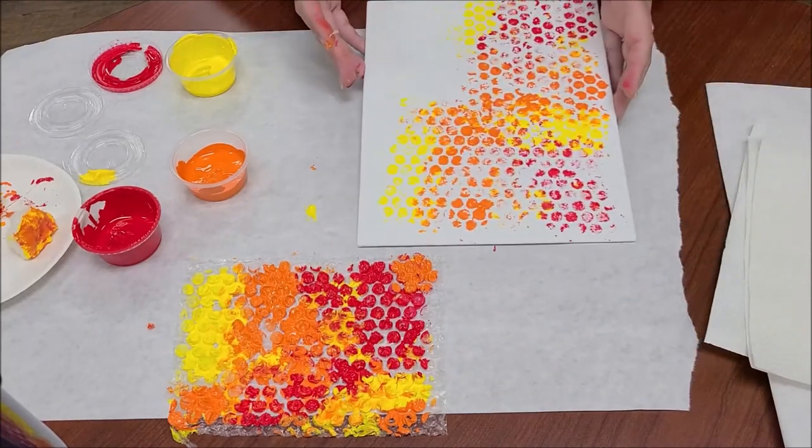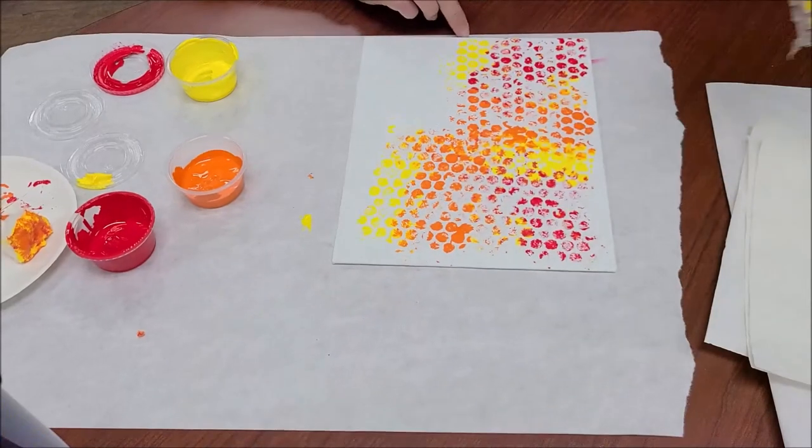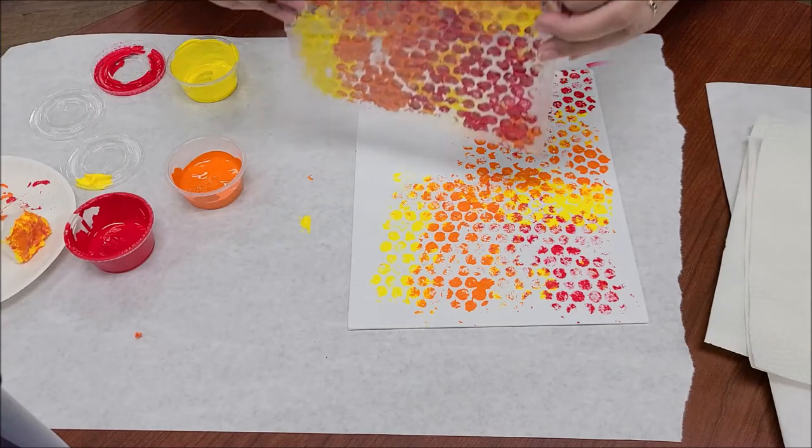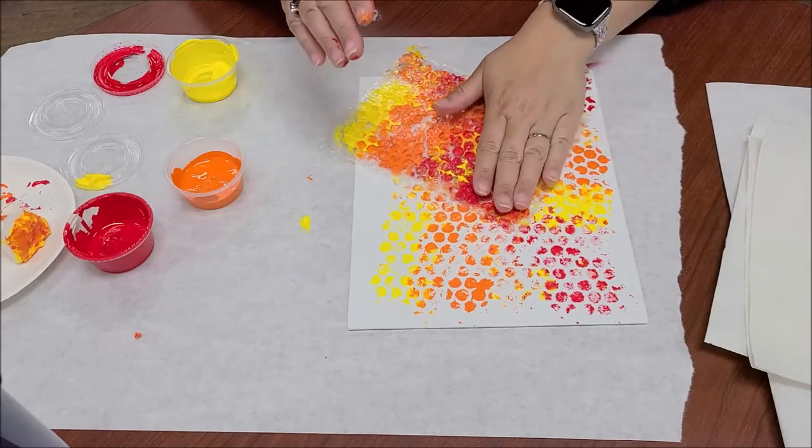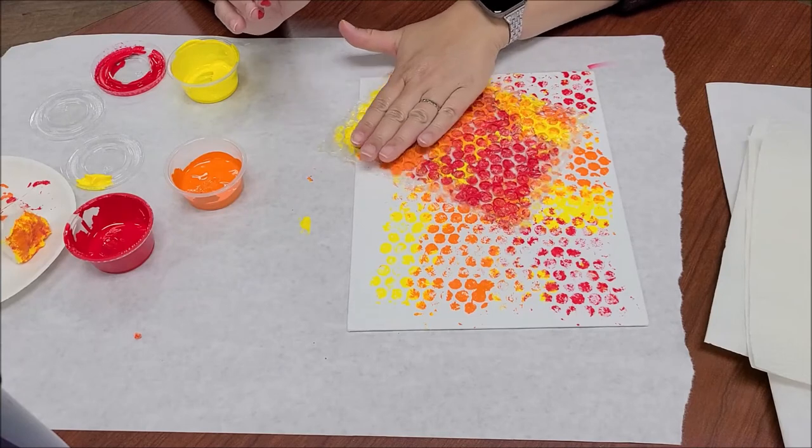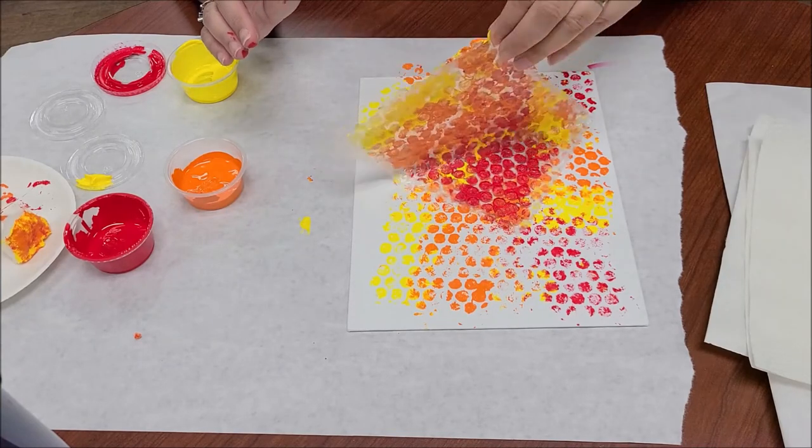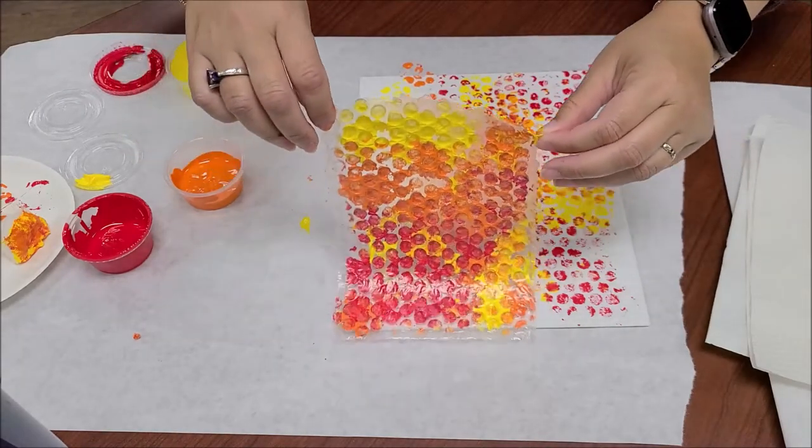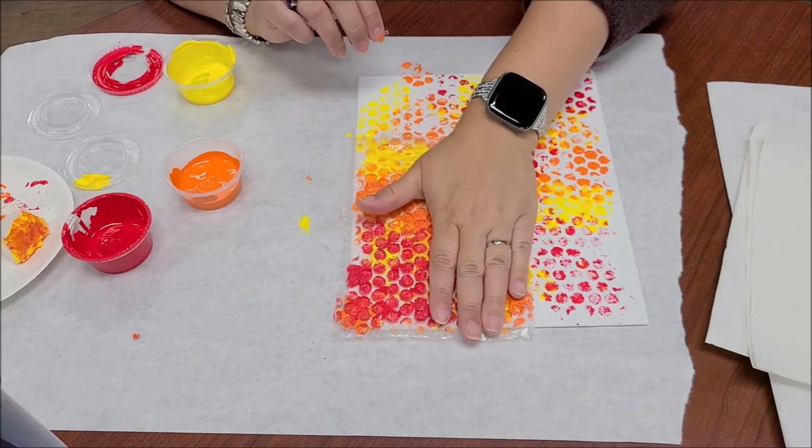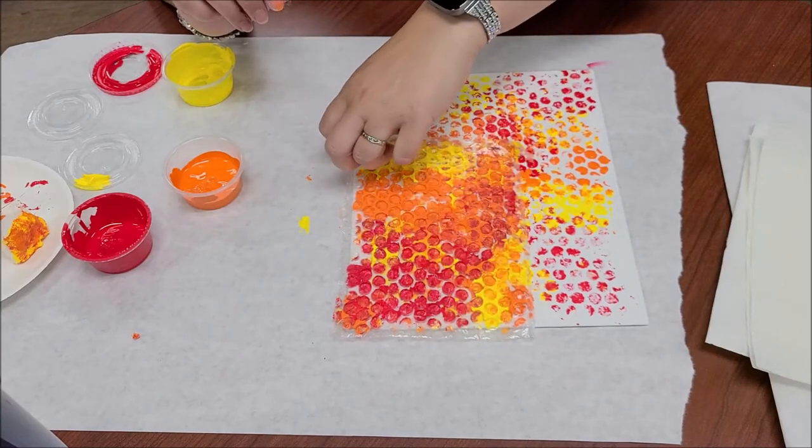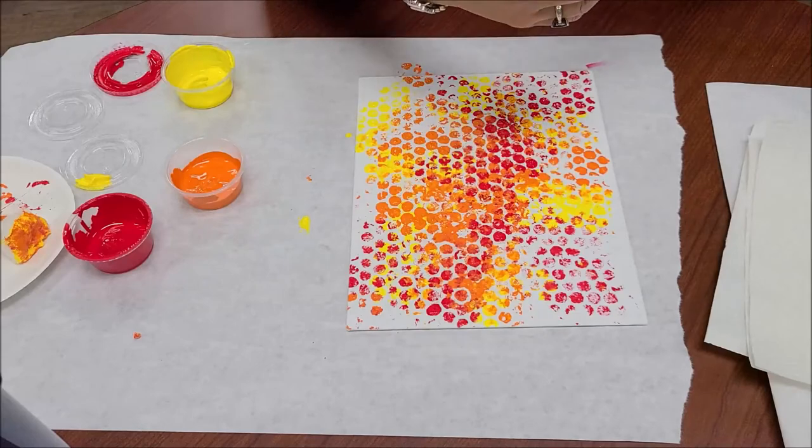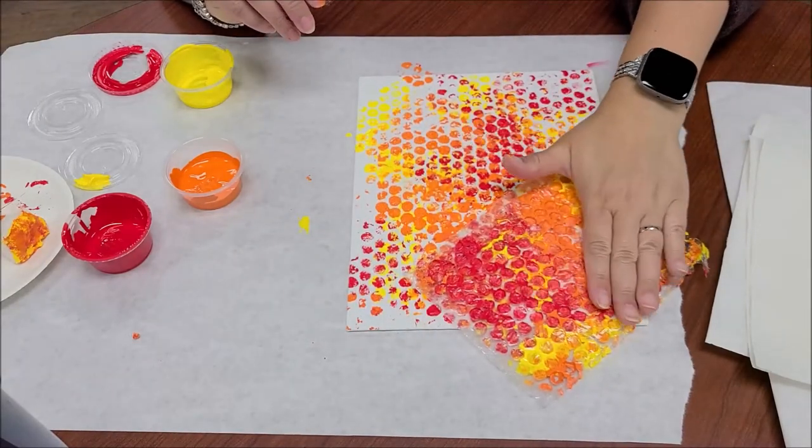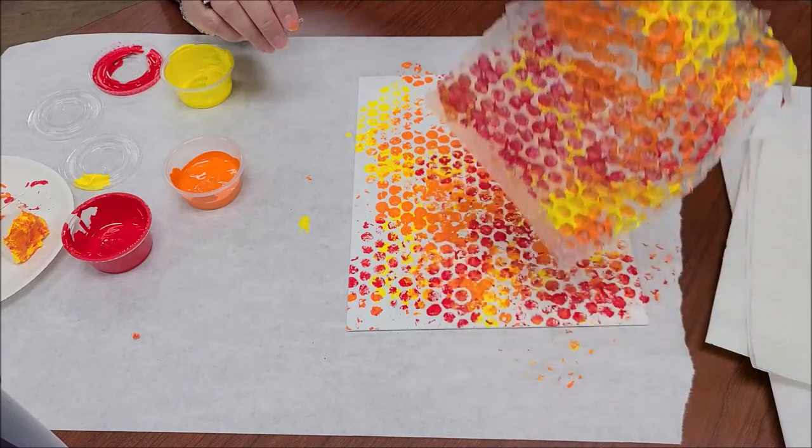So we'll set that aside for a sec. Put this back here. And lay this down like that. Remember, pat, don't smear. And then, let's get that corner. And anywhere along on your painting that you see that you think might need some color, you can lay it down. There we go.